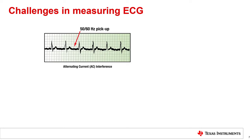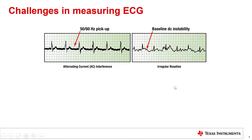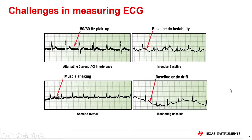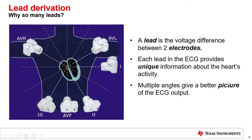As we alluded to earlier, there are some common challenges to measuring ECG. These challenges usually come from power line interference, baseline instability from poor electrode connection, muscle shaking, and wandering baseline from the changing DC level of the electrodes. Some of these challenges can be overcome with good circuit design, but most often digital post-processing is required to bandpass filter the ECG waveform from DC drift or high-frequency interference.